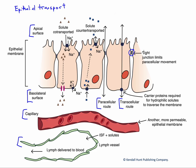How tight these tight junctions are is variable. What they're permeable to is also variable depending upon the tissue. Sometimes only water is allowed to pass; sometimes not even water is allowed to pass. The transcellular route requires passage across both the apical membrane and the basolateral membrane of these cells, because it has to pass through the entirety of the cell.